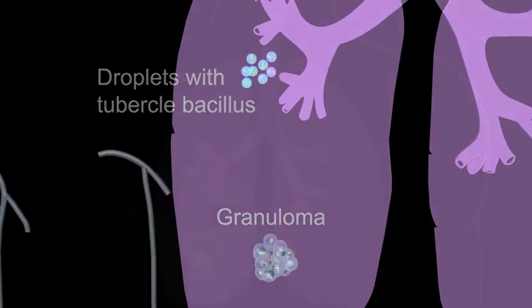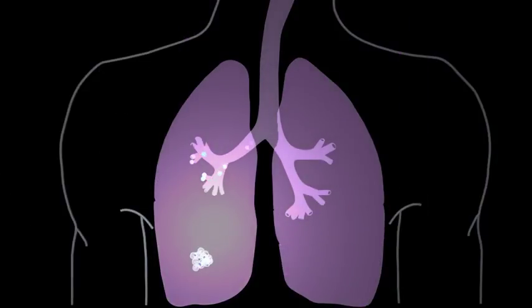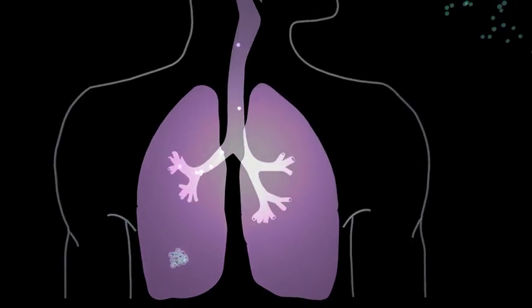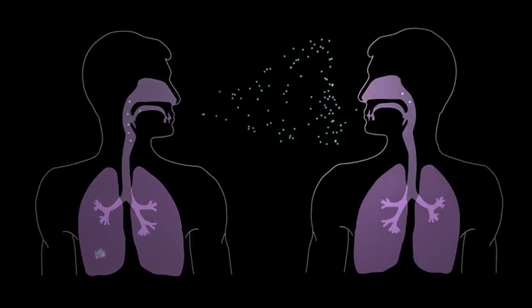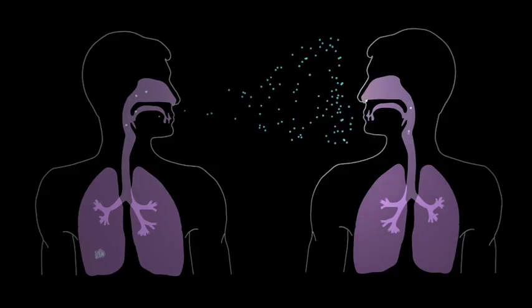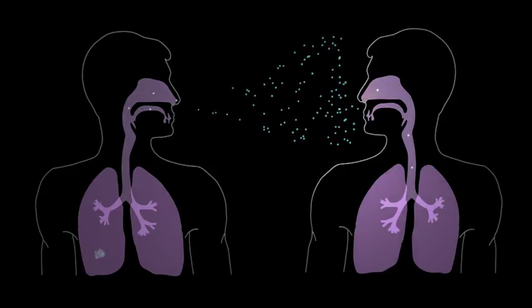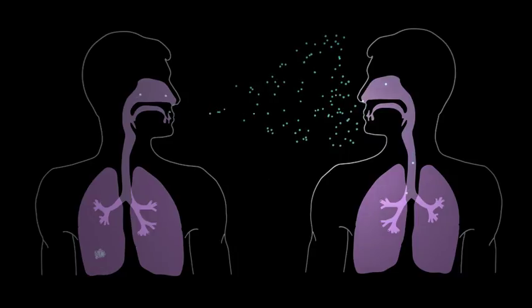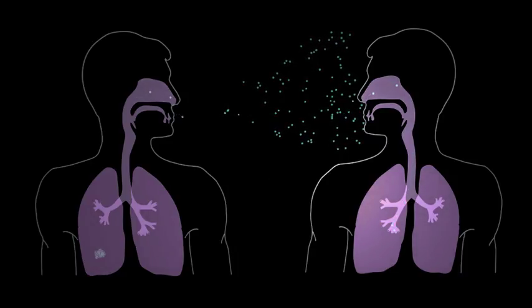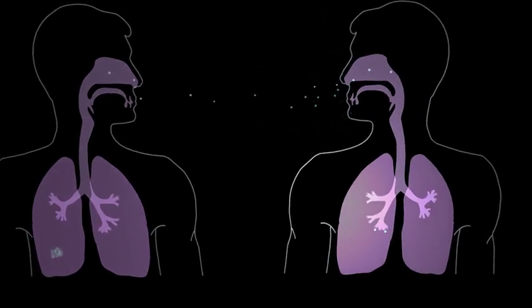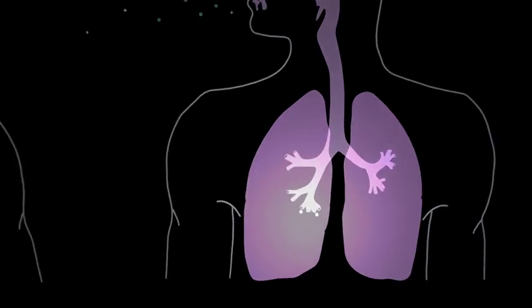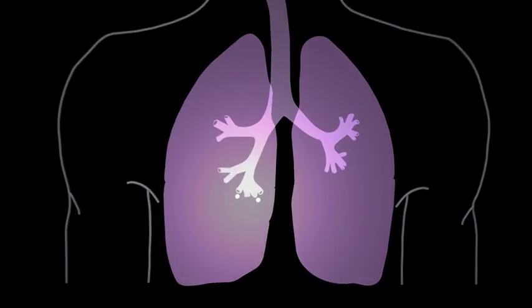Here we will take a look at the very first events that occur when the tubercle bacillus first lands in the host. An infected individual with active tuberculous granulomas coughs up the bacteria in small droplets. These droplets are inhaled by an individual nearby and the smallest ones make their way to the terminal branches of the lung called alveolar spaces or sacs.